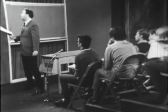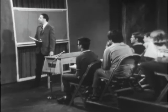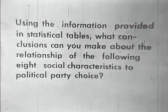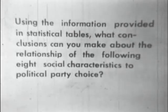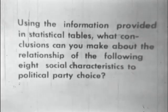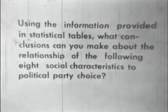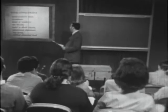In this lesson, we are going to use statistical data to make conclusions about the behavior of American voters. The question we will discuss today will be presented on the screen: using the information provided in statistical tables, what conclusions can you make about the relationship of the following eight social characteristics to political party choice? Now we'll take a look at the eight social characteristics we're going to use in our discussion. They are, as you can see: